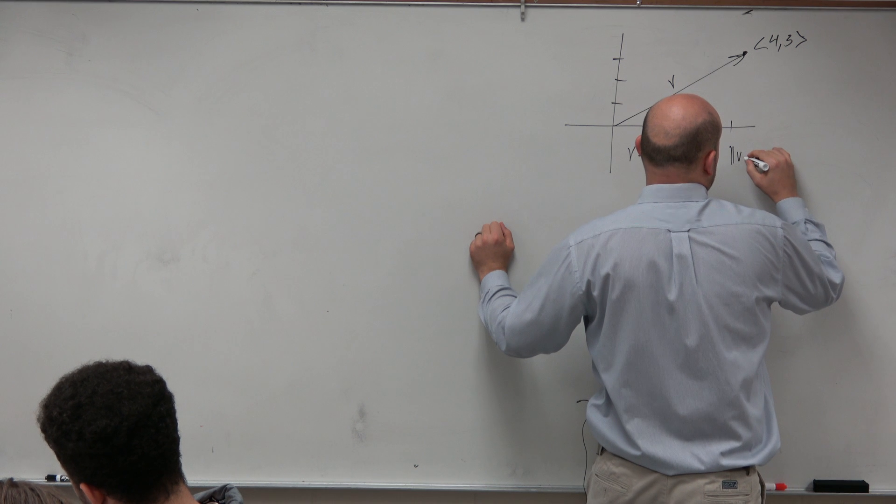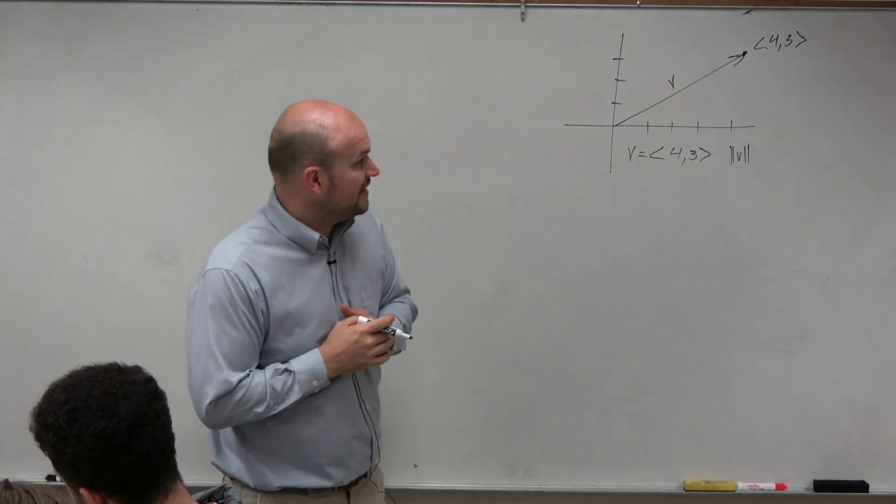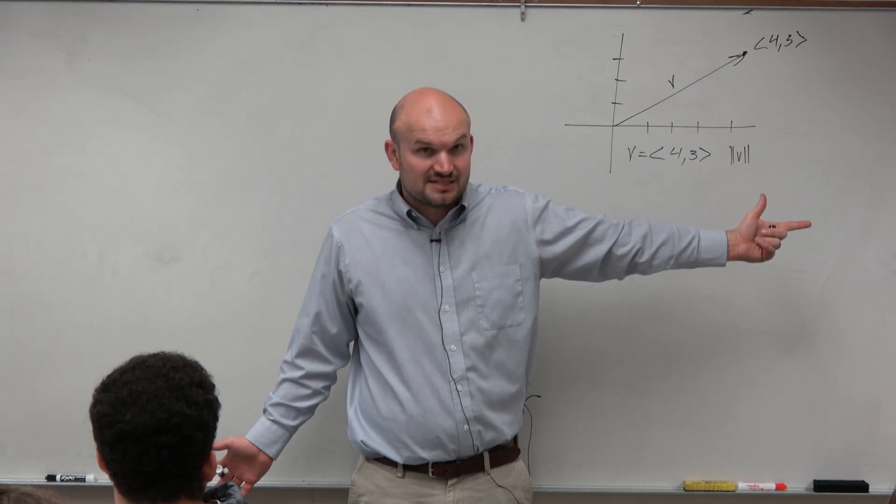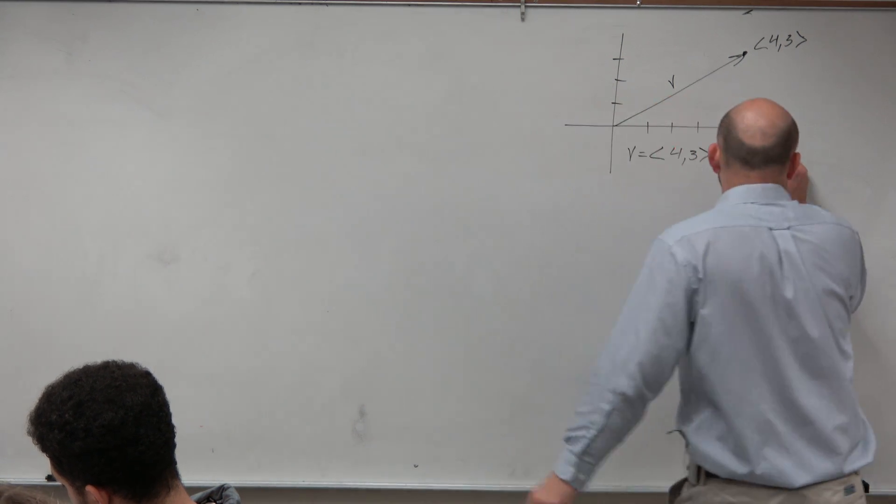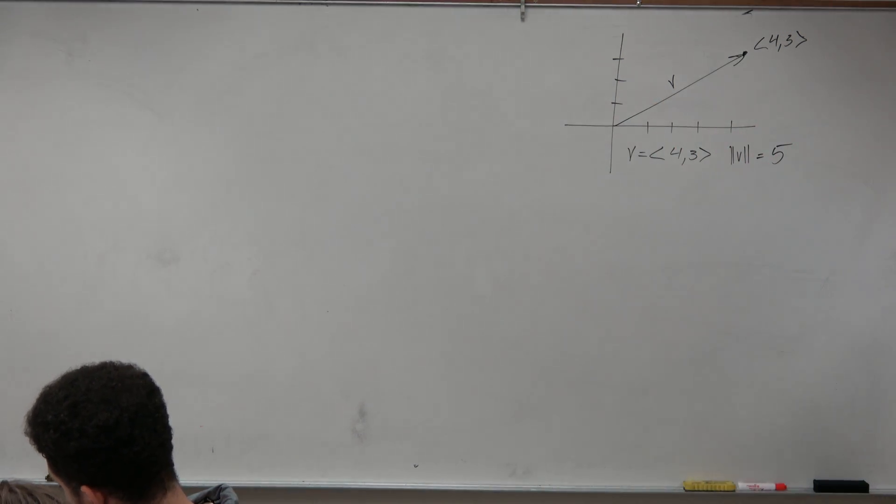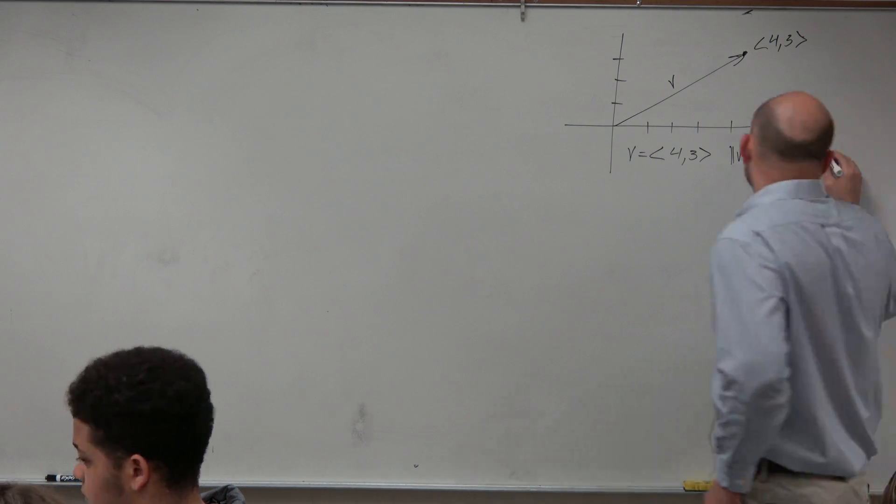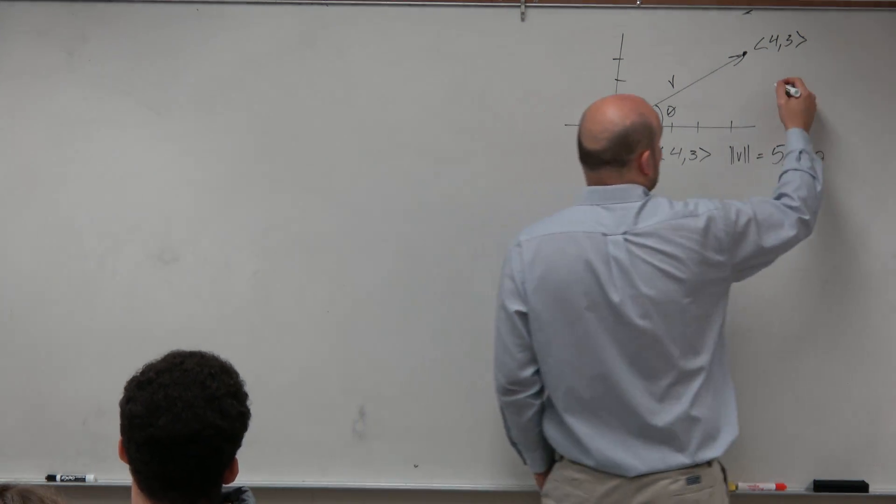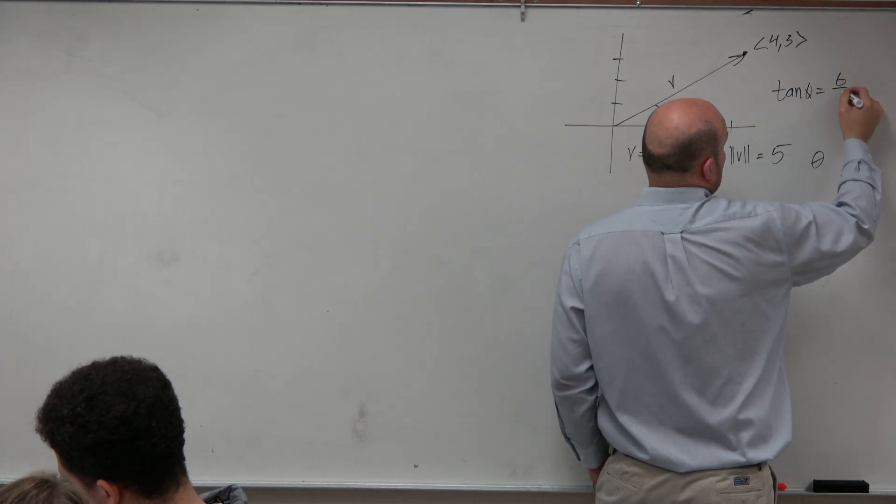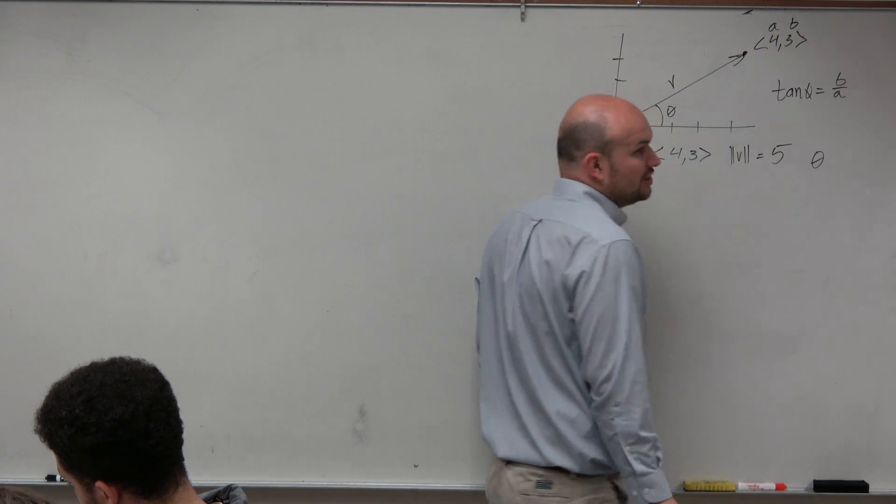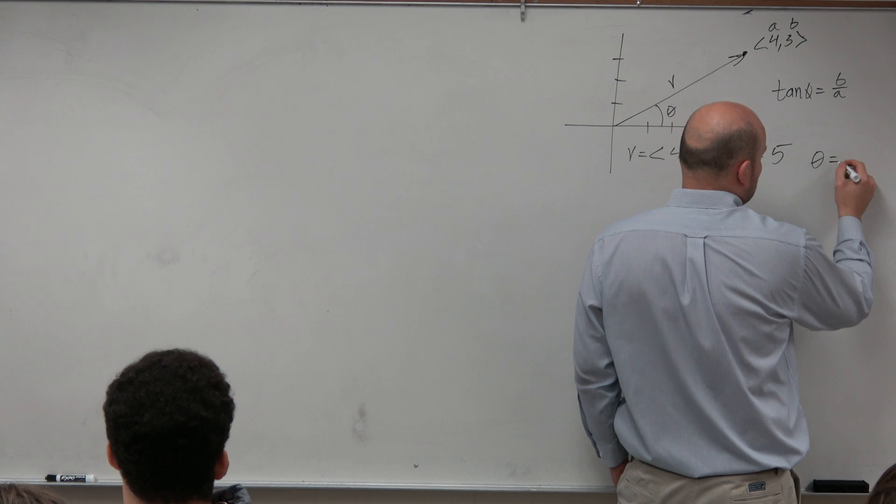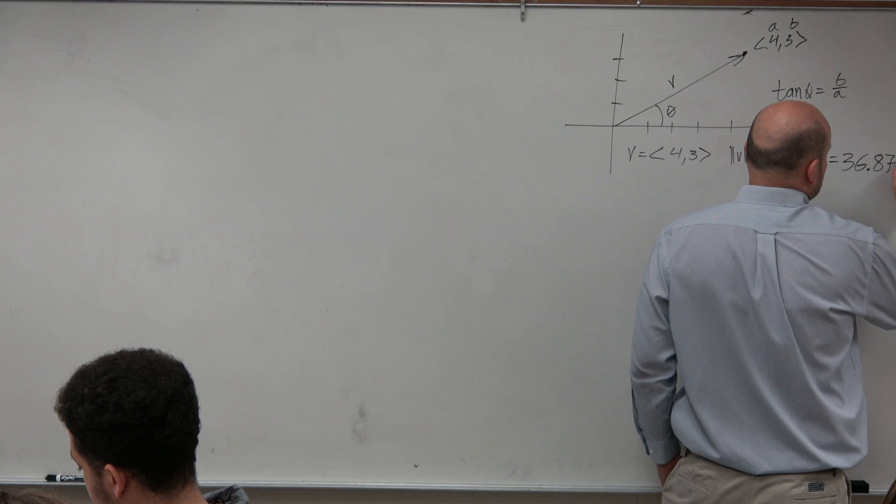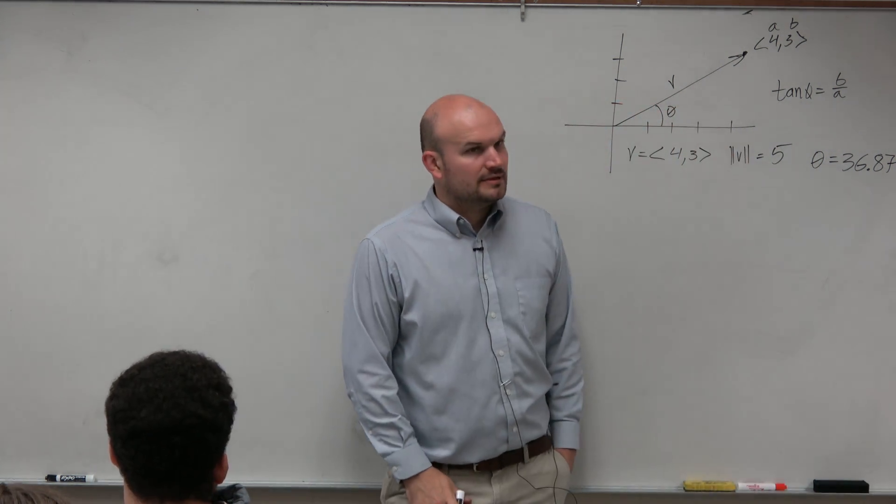The magnitude of the vector was basically the length of the vector. And if you guys remember, we did the magnitude formula, which is like the Pythagorean theorem as well as the distance formula, which ended up giving us a magnitude of 5. And then we also found the angle of the vector.